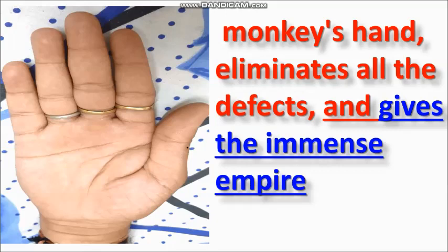A longer thumb shows your willpower, your desire, your ambition in life. In this picture, this thumb is just reaching near the Jupiter second flange — and you can say this thumb is very long. As well as this thumb is slightly bending outward. Whenever you see a bending thumb, or a thumb that is quite soft, you can say that this person has a lot of ability to do something in business.